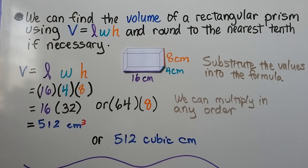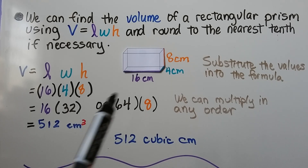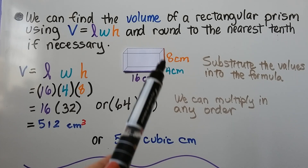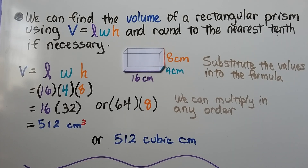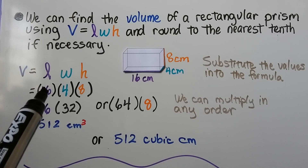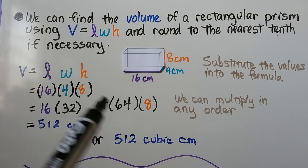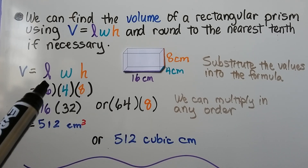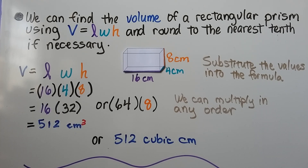We can find the volume of a rectangular prism using V = LWH, rounding to the nearest tenth if necessary. Here we have a length of 16 centimeters, width of 4 centimeters, and height of 8 centimeters. Substituting into the formula: 16 × 4 × 8. We get 64 × 8, which gives us 512 cubic centimeters.